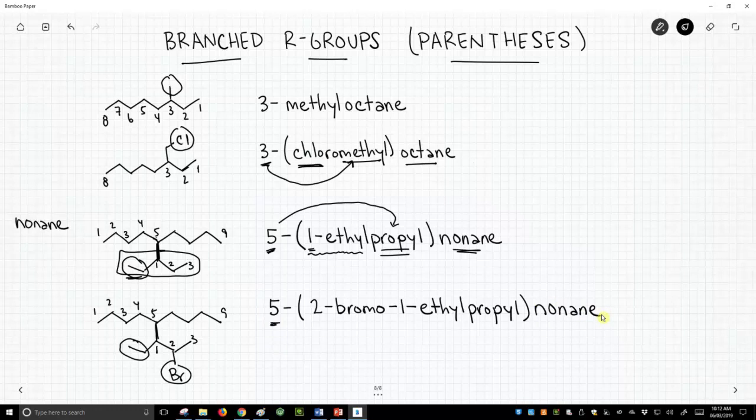So this is how we use parentheses. We use it to break up our name so that we can refer to other positions. So this propyl chain has two groups on it. One in the two position of bromo, one in the one position, an ethyl. And then the five position refers to where the entire chain is on the nonane. So that's how we use parentheses to incorporate more complex branched R groups into our molecules.